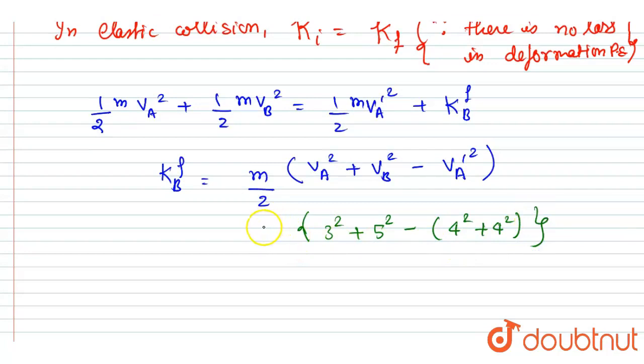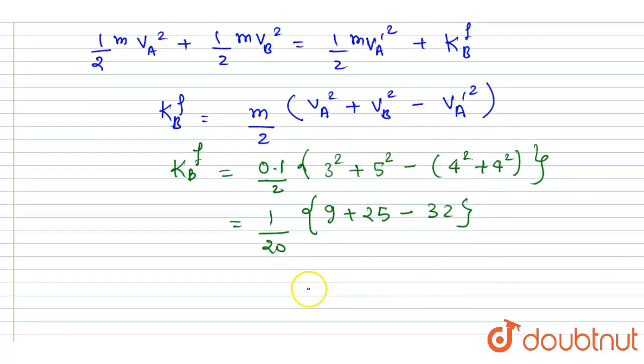So I will write here 4 squared plus 4 squared. Here the mass is 0.1, so this will be the final kinetic energy of B. So 3 squared is 9 plus 25 minus 4 squared is 16 plus 16 is 32, and I will get this. So 34 minus 32 will be 2, so we will get 1 by 10 as the final kinetic energy of B.